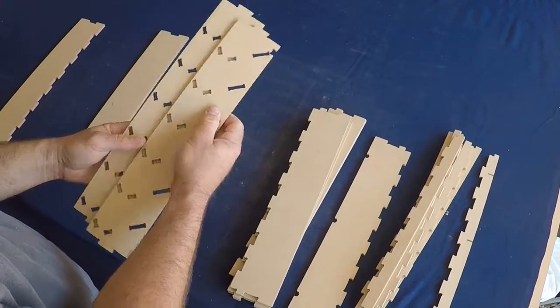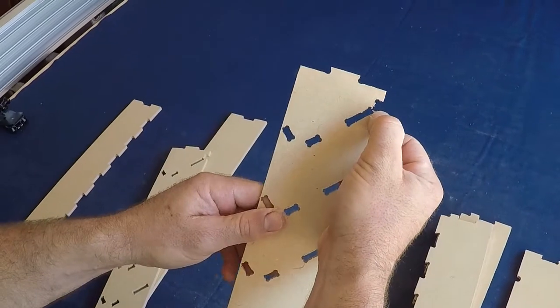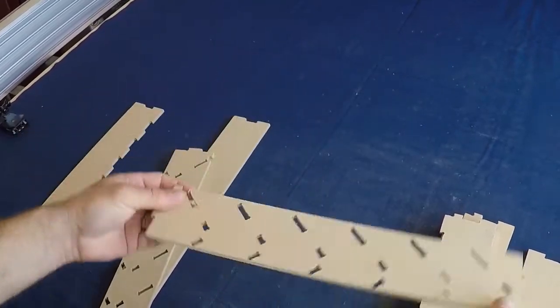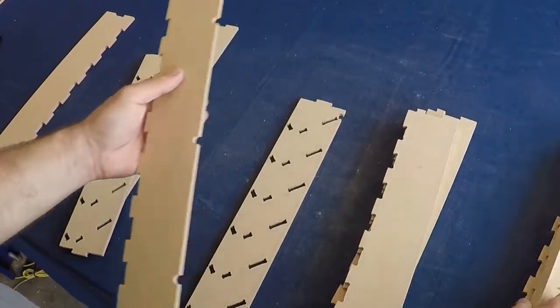Next we'll grab one of the sides. They're identical. The top is identified by the little notch. Taking the shelf with the notches on the back of it.